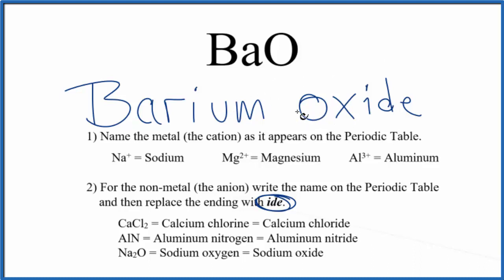If you were given the name and asked to write the formula, you need to realize that barium, when it bonds, forms two plus ions. Oxygen forms ions with a two minus ionic charge. The two plus and the two minus balance out, give us a net charge of zero, so we only need one barium and one oxygen together for barium oxide.